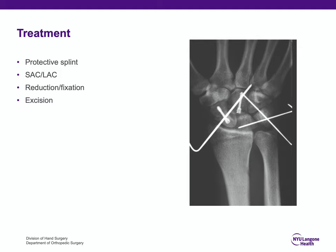Carpal bone fracture treatment can range from a protective removable splint to even excision. Some carpal bone fractures are innocuous and require only protective splinting until patients are asymptomatic. Some carpal bone fractures require a short arm cast.